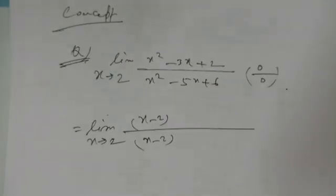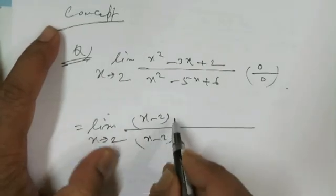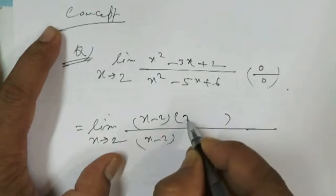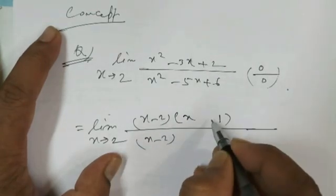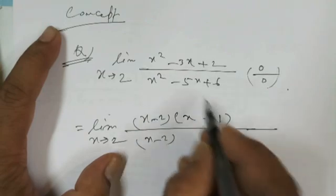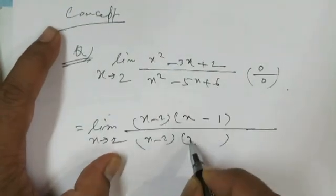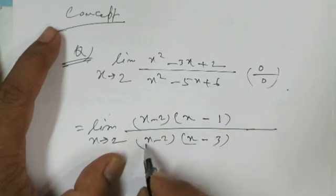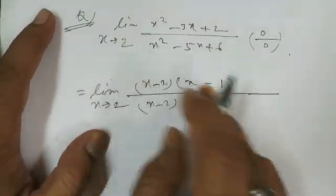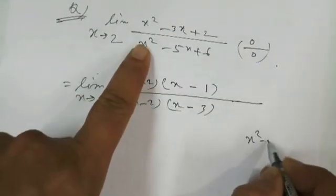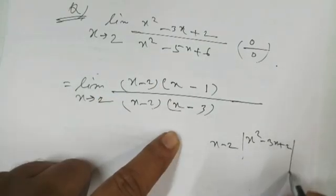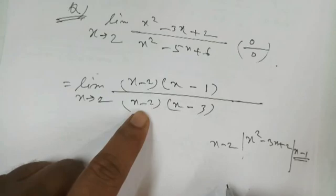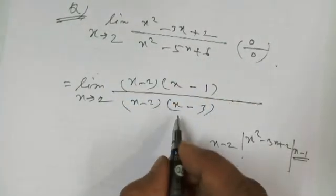Dividing (x² - 3x + 2) by (x - 2) gives (x - 1). Dividing (x² - 5x + 6) by (x - 2) gives (x - 3). So the expression becomes (x - 2)(x - 1) / [(x - 2)(x - 3)]. Since x tends to 2 and x is not equal to 2, you can cancel (x - 2).